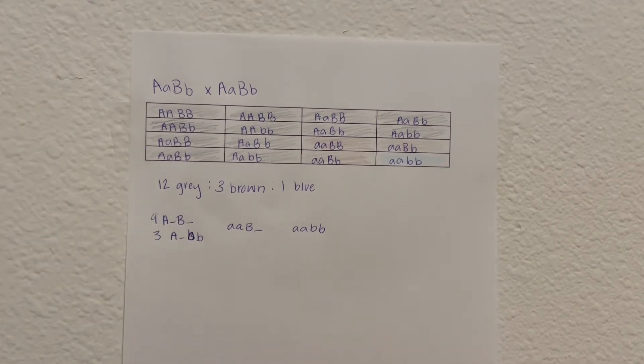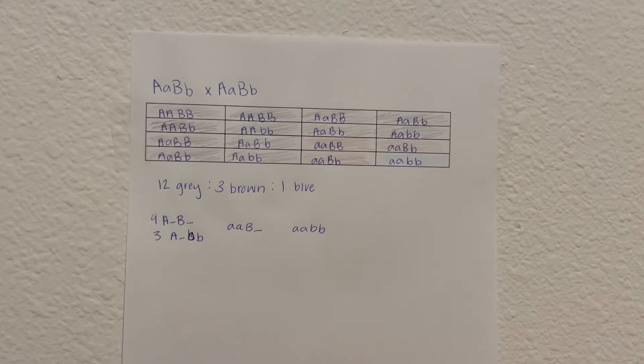So when we do a heterozygous cross for single dominant epistasis, we will get a 12 to 3 to 1 ratio.